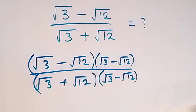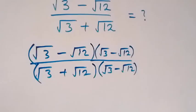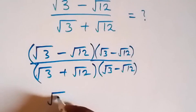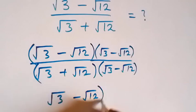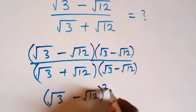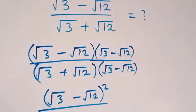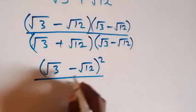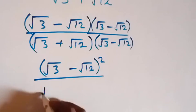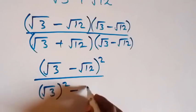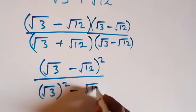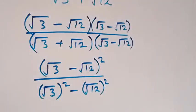Then from here we can write it as (√3 minus √12) all squared, divided by here we have the conjugate, which gives us (√3)² minus (√12)².